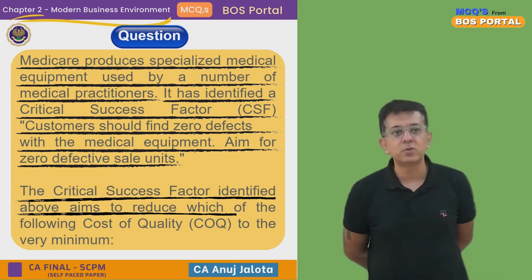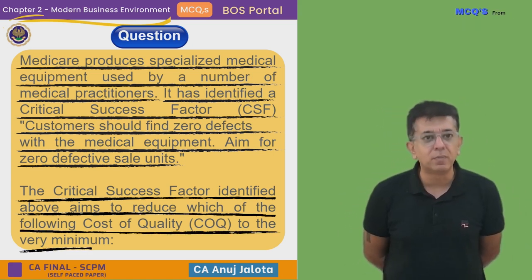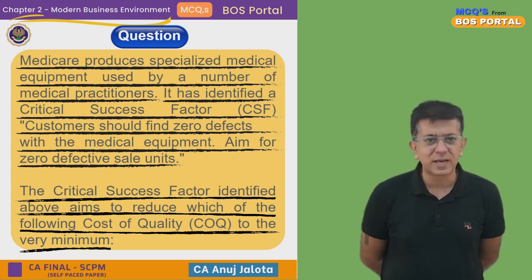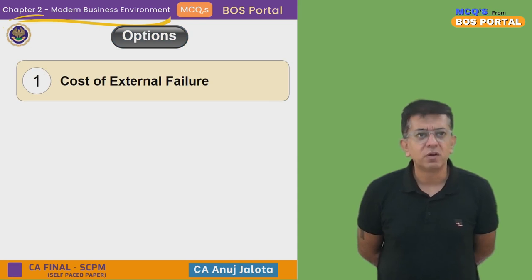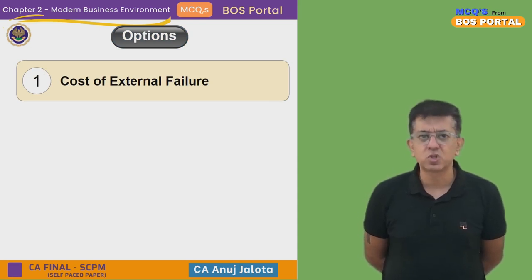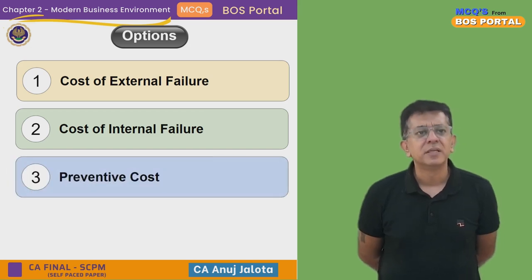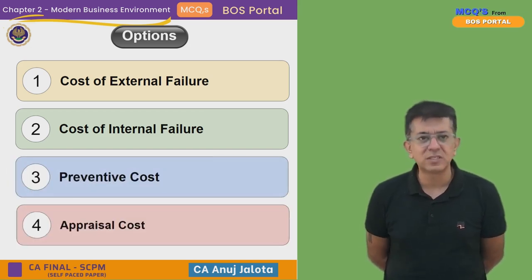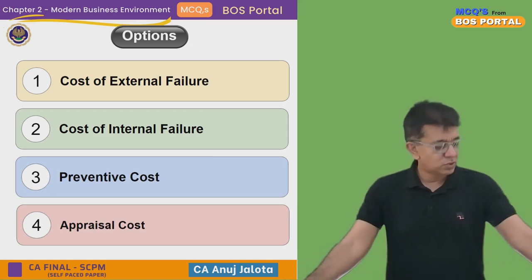The critical success factor identified above aims to reduce which of the following cost of quality to the very minimum? Now, cost of quality is in four parts — those must be the four options also. One of them is cost of external failure, then cost of internal failure, then preventive cost, and lastly appraisal cost. We want zero defective units, so therefore there should not be any returns from the customer.